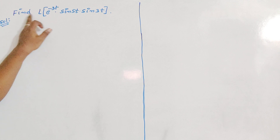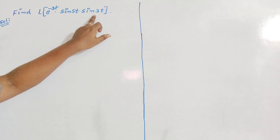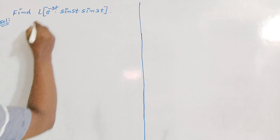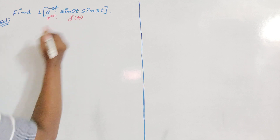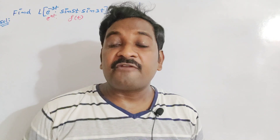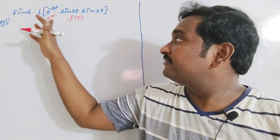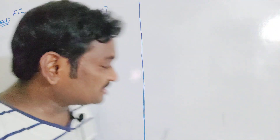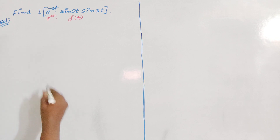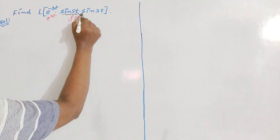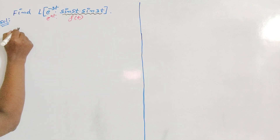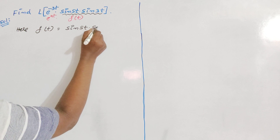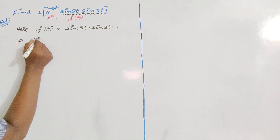The next example: Find L{e^(−3t) · sin5t · sin3t}. We have to find the Laplace transformation of this function. Clearly, here also the given function is in the form e^(at) · f(t). Every student should identify the structure of the given function inside the Laplace. If it is in the form e^(at) · f(t), we have to apply the first shifting theorem. So f(t) = sin5t · sin3t.